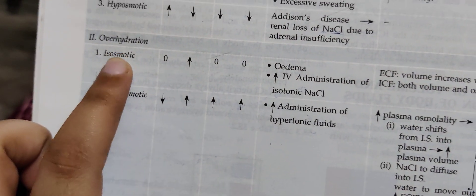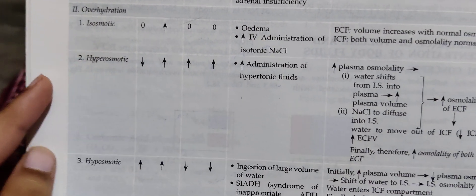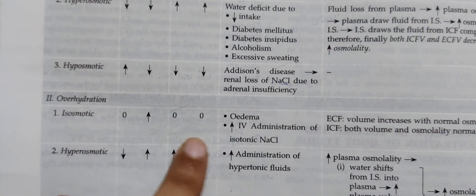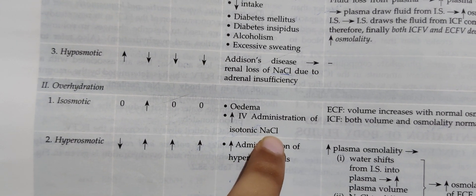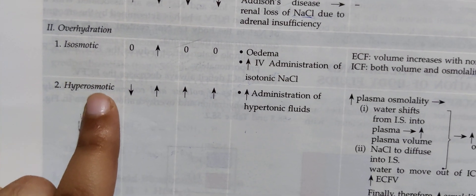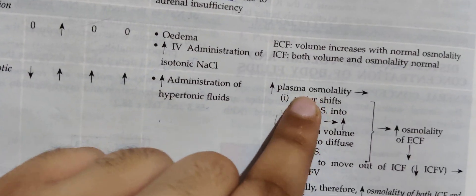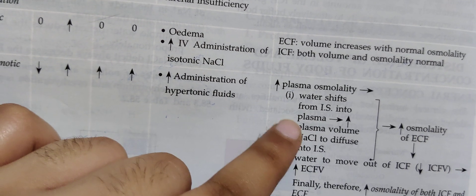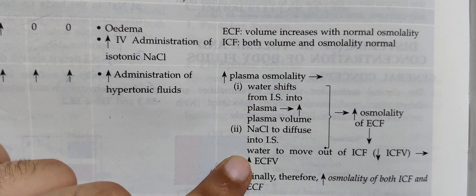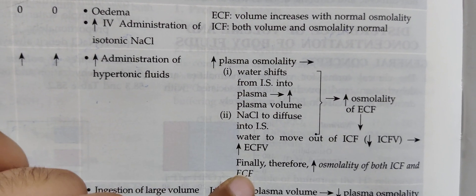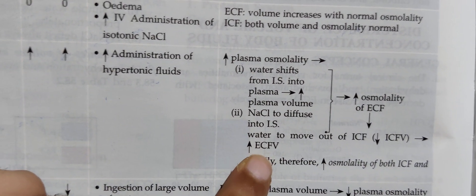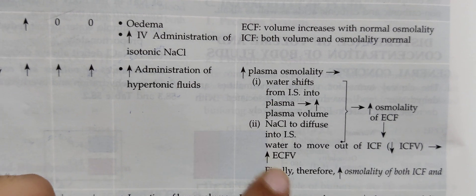Now for over-hydration. Iso-osmotic over-hydration is the opposite: administration of isotonic solution causes ECF volume to increase. In hyper-osmotic over-hydration, plasma osmolality increases, so water shifts into the plasma, increasing plasma volume. Solute then diffuses to the interstitial space, causing water to move out of the ICF. Therefore, intracellular fluid volume decreases, ECF volume increases, and osmolality increases in both compartments.